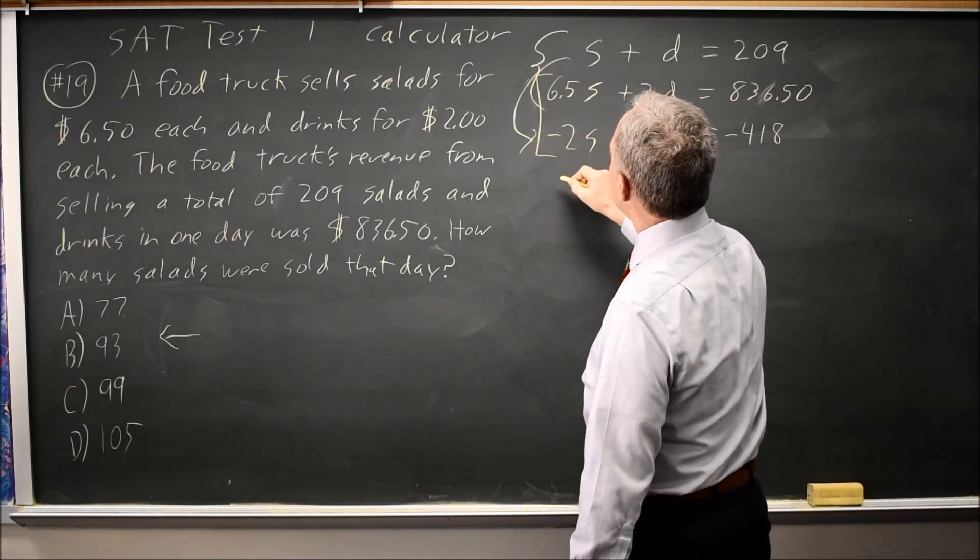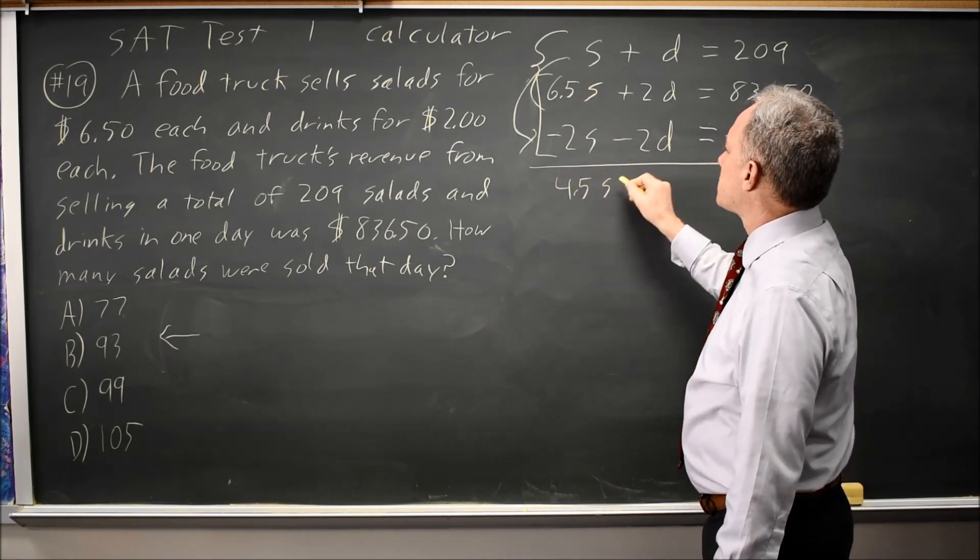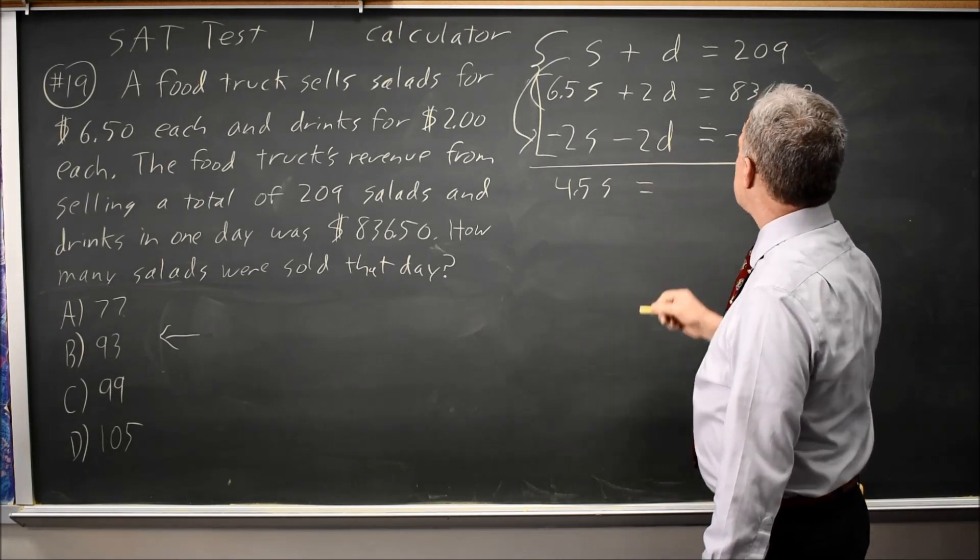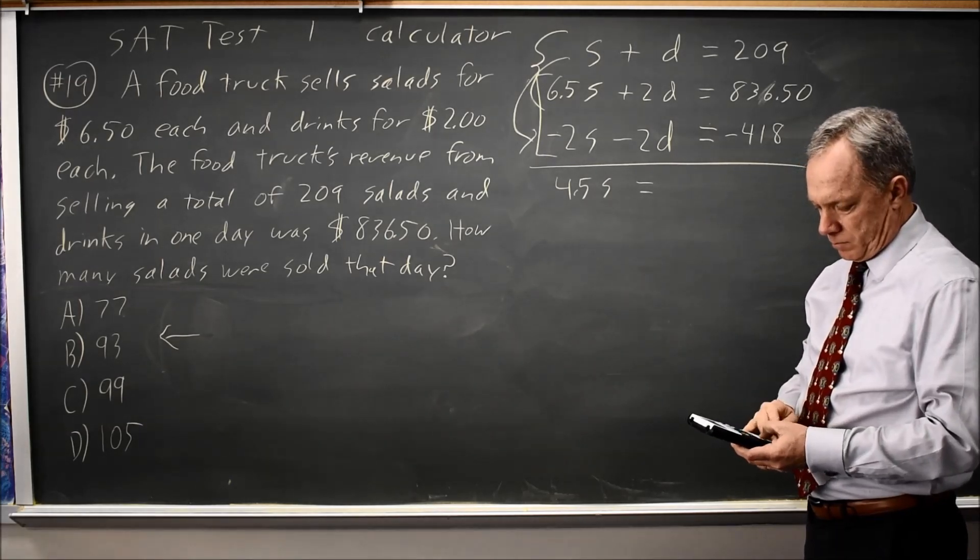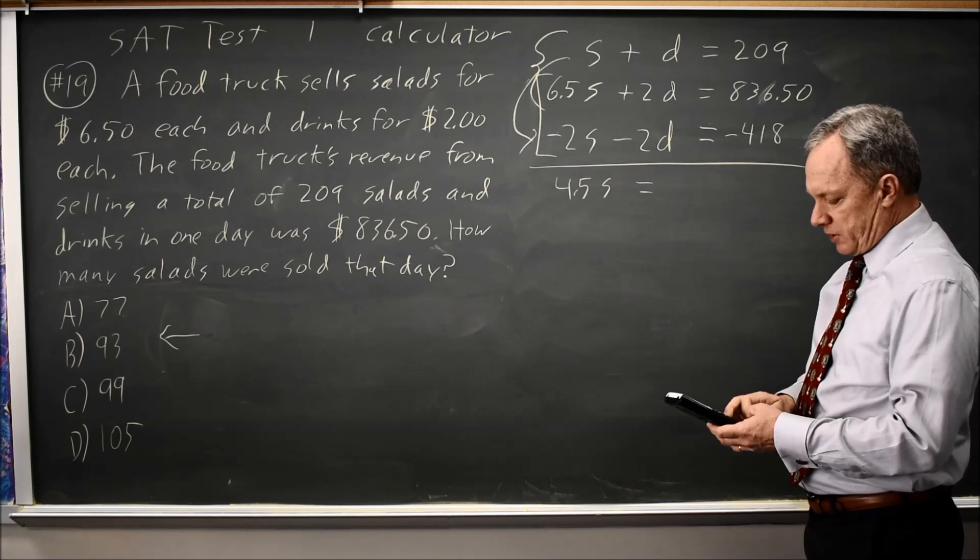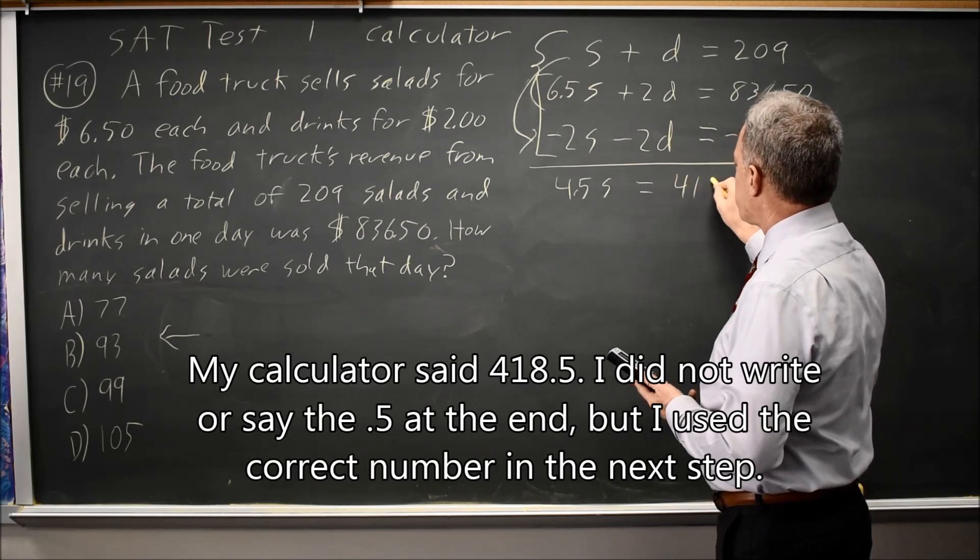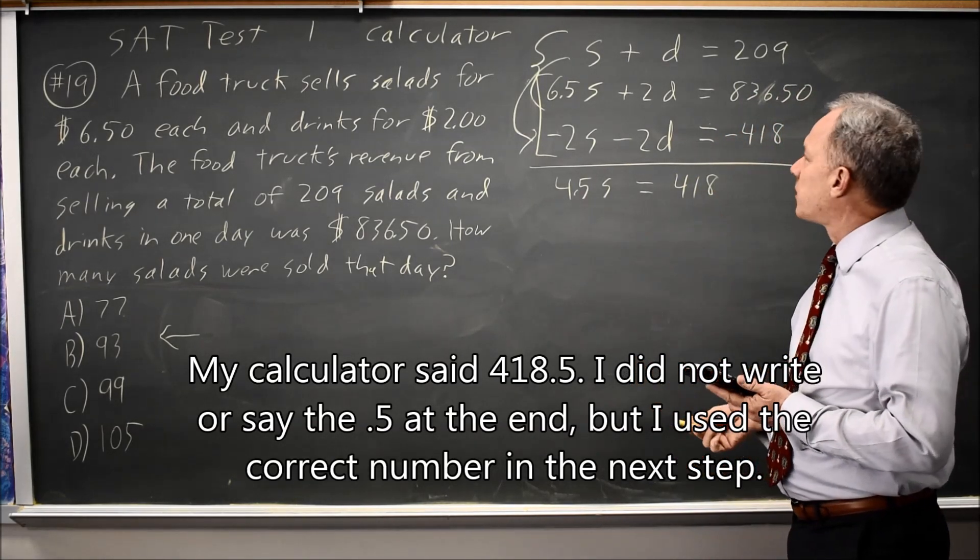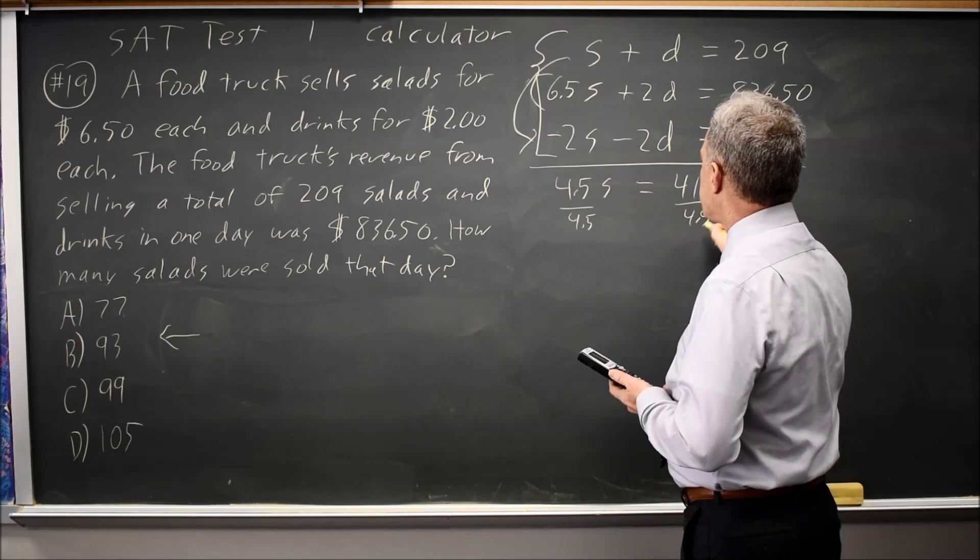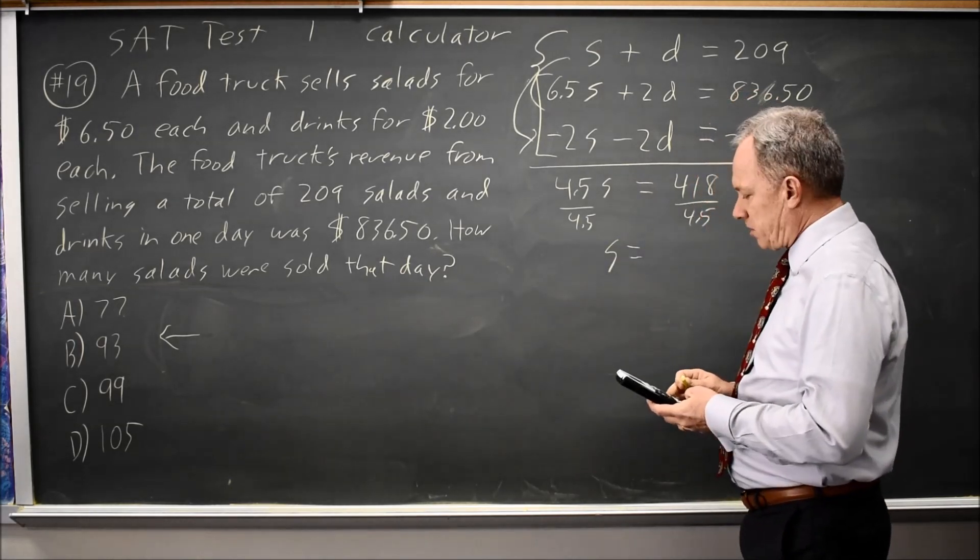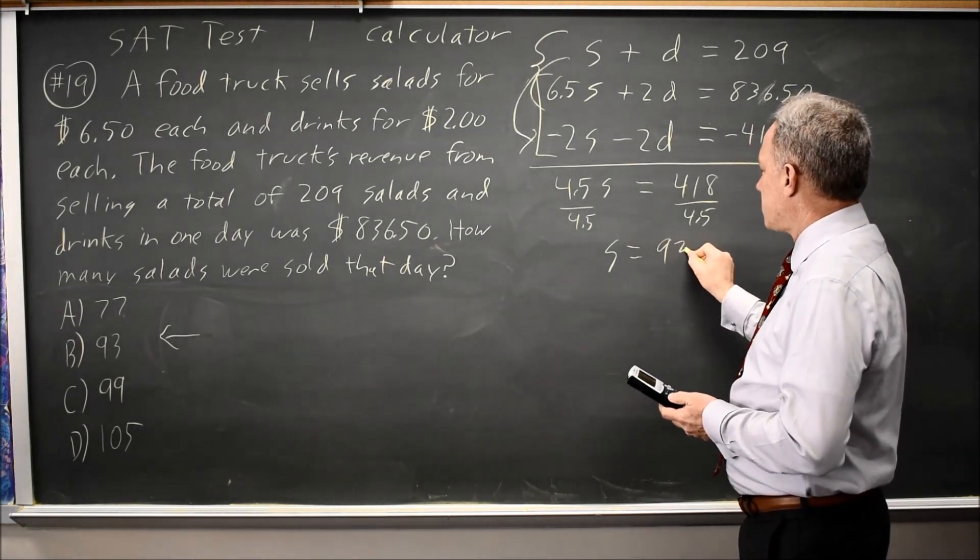When I add these two equations, 6.5S minus 2S is 4.5S. 2D minus 2D is 0, and 836.50 minus 418 equals 418.50. And I could have just said minus 418, but I've got a calculator. I might as well check my math. Divide both sides by 4.5 to get S by itself. And we could have done this by hand, it would just take a little while for things like dividing by 4.5. I get S equals 93, the same answer.